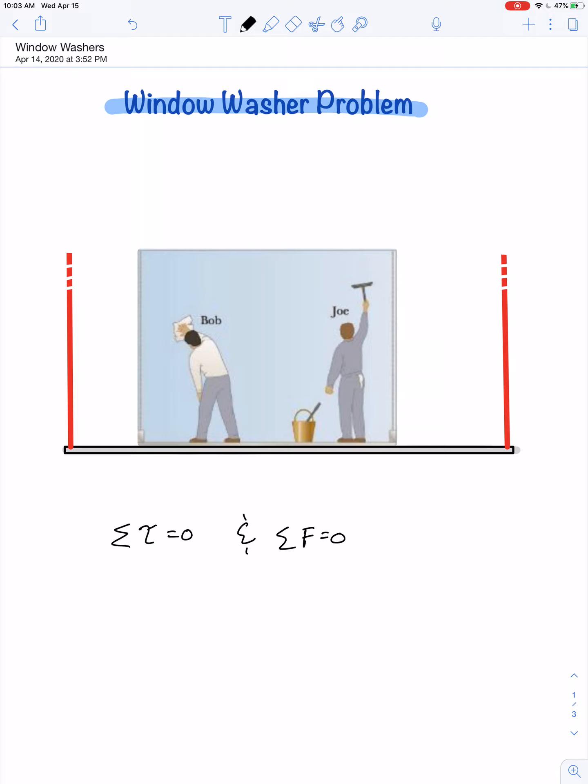In order to determine two things: how much tension is in the cable on the left that supports the scaffold that the window washers stand on, and how much tension is in the cable on the right. We'll call them T1 and T2.